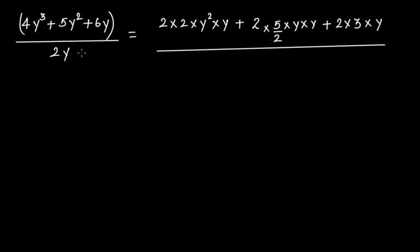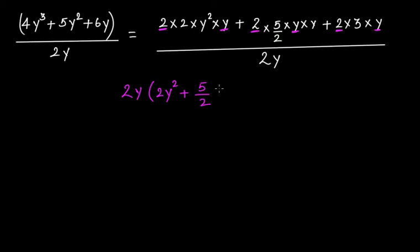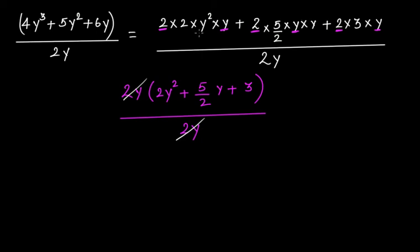Write 6y as 2 × 3 × y. Now you have 2y in the denominator. This 2, this 2, and this 2 — this y, this y, and this y — 2 and y are the two factors common in each term. Take it out: you get 2y × (2y² + 5/2·y + 3). In the denominator you have 2y, and this 2y gets cancelled. Now you understand why we multiplied and divided 5y² by 2 — just to get the two common factors 2 and y, so we can cancel 2y in the numerator with the 2y denominator.